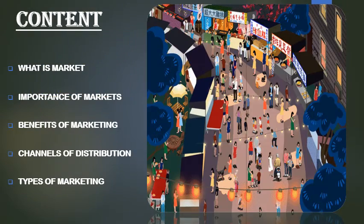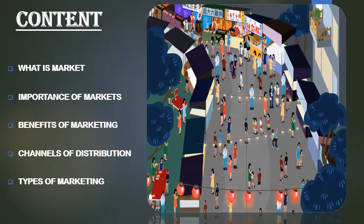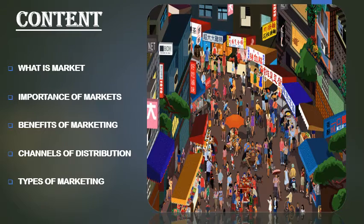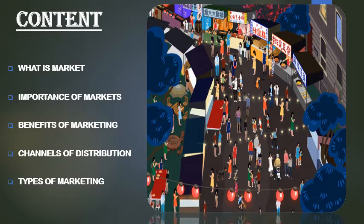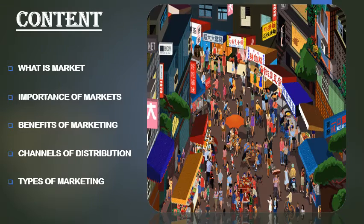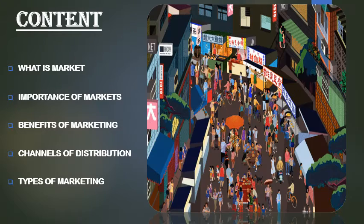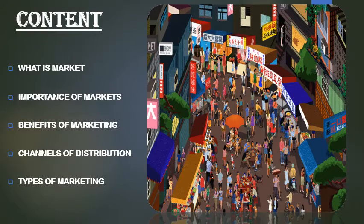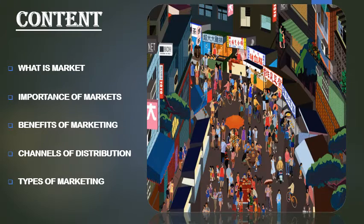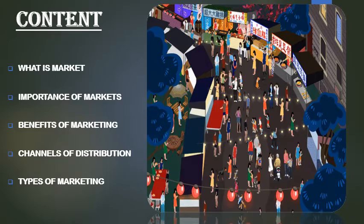So what are we going to discuss in this chapter? First of all, we will know what is a market. Next, the importance of markets. We will also know about the benefits of marketing and channels of distribution, in which we will discuss wholesaling and retailing markets. And at the very last, we will know what are the main types of marketing.